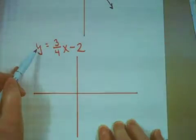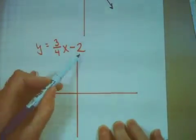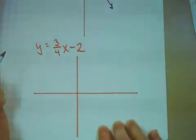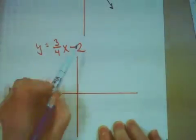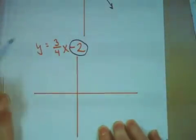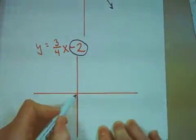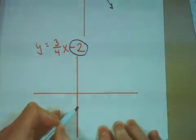Here's another example, y equals 3 fourths x minus 2. What value should I start with? That's right, I should start with the negative 2. That means this time I'm going to go down 2, put a big fat dot.